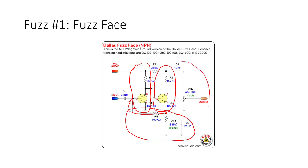At the end there's just decoupling with a volume potentiometer. There's also a potentiometer called the fuzz with a capacitor in parallel with it. As we know, putting a bypass capacitor in parallel with the emitter resistor of a transistor increases the gain. So by changing the relative angle of the potentiometer, you can increase or decrease the gain of that stage.